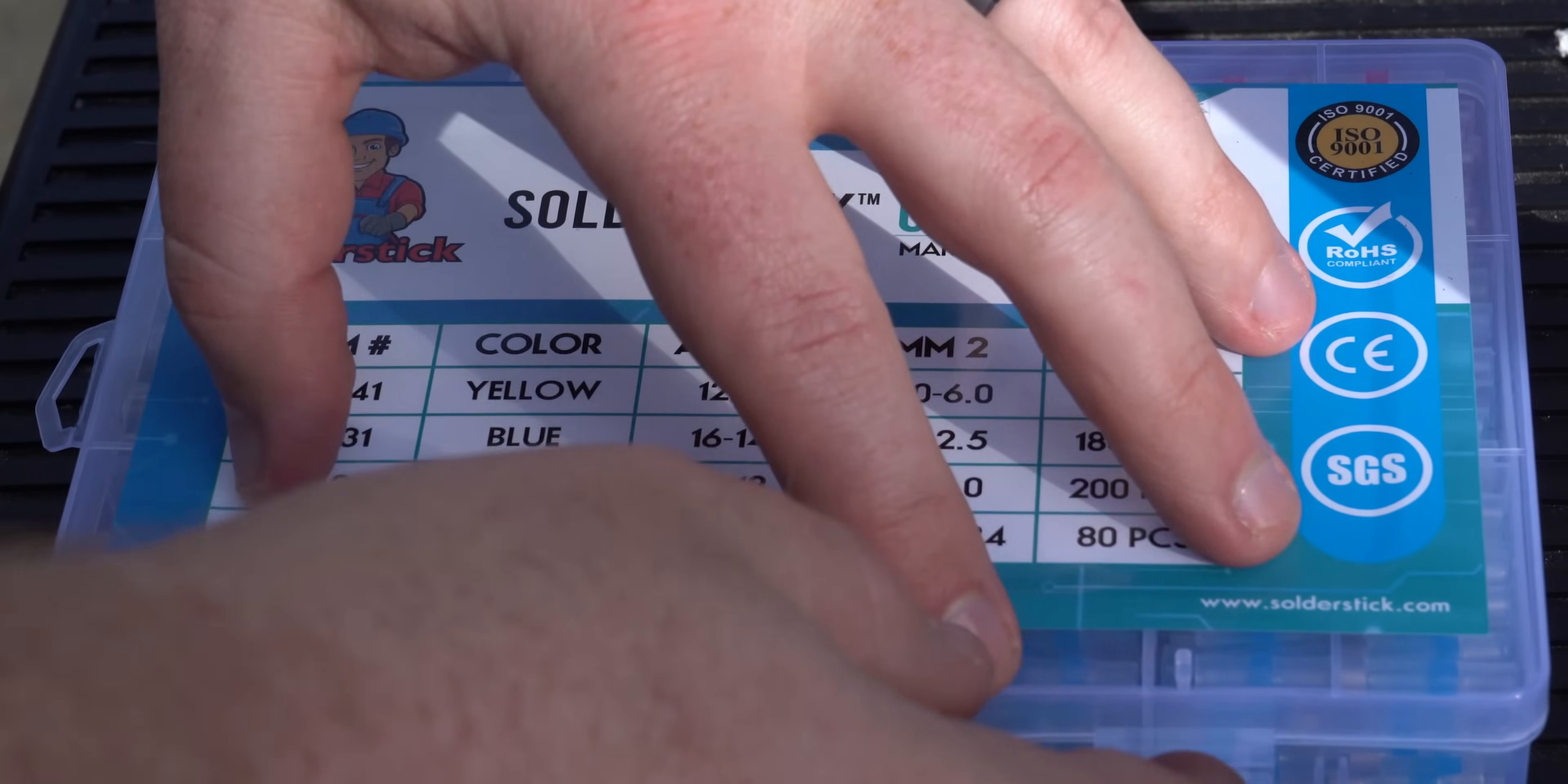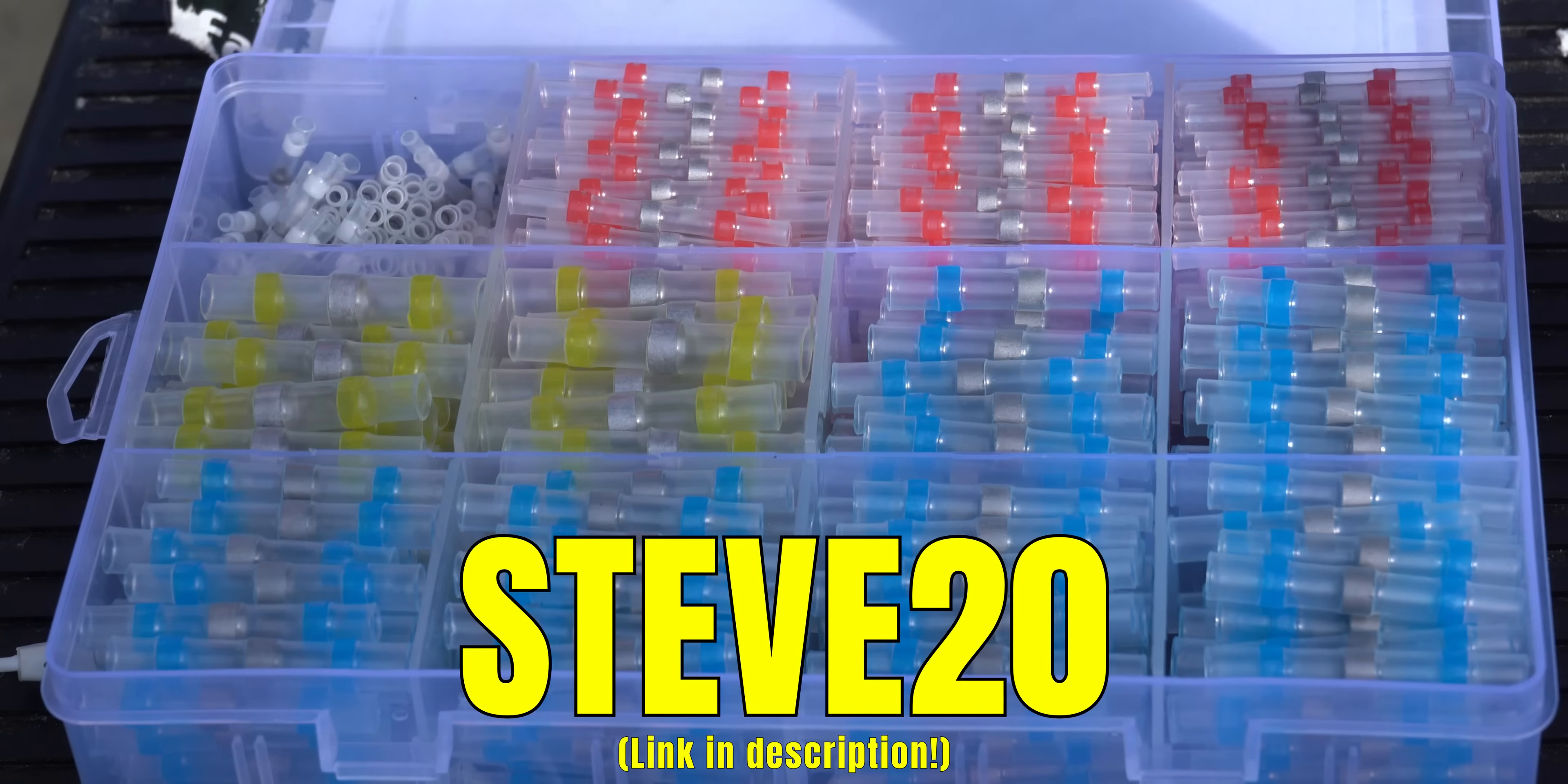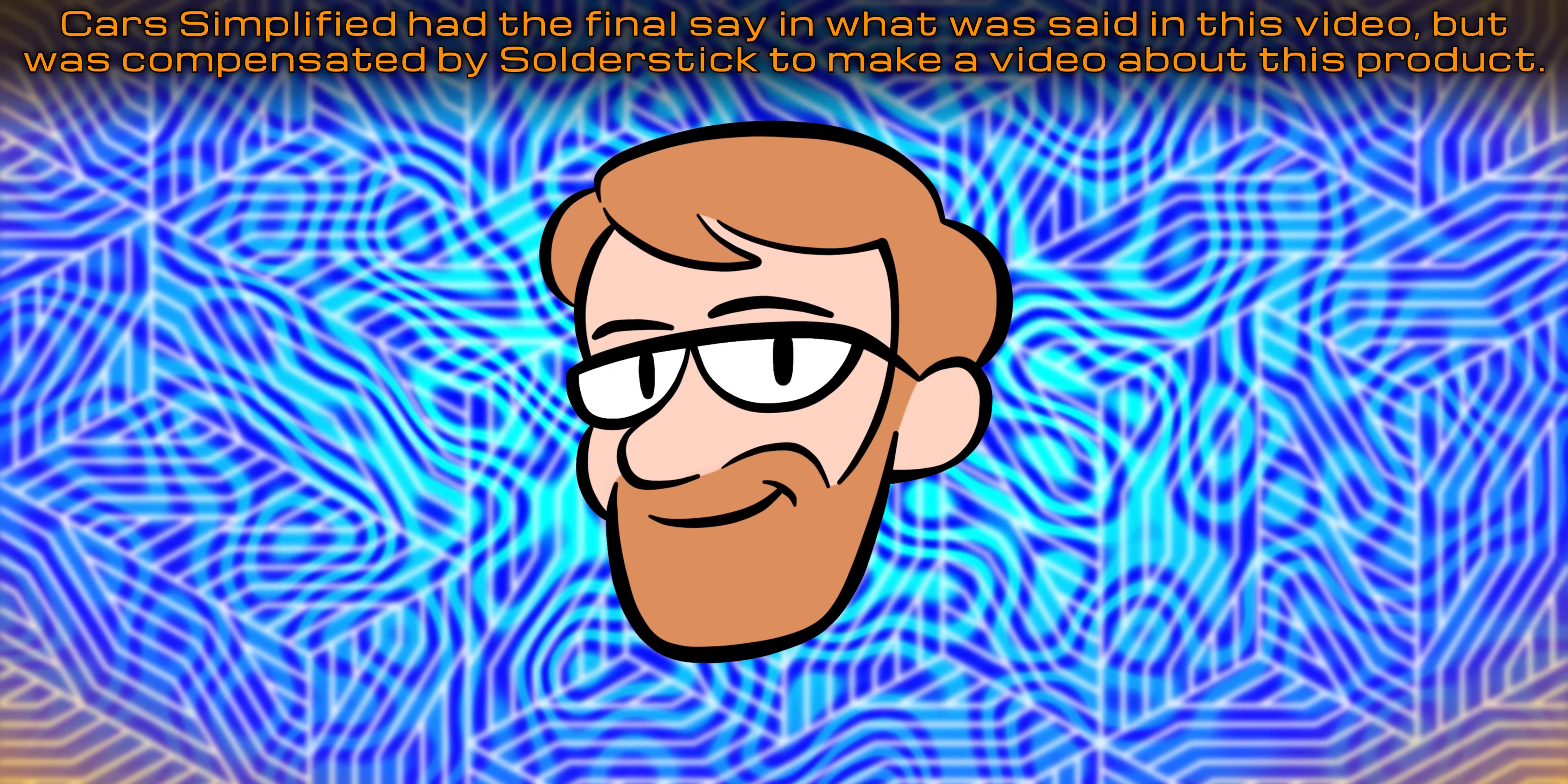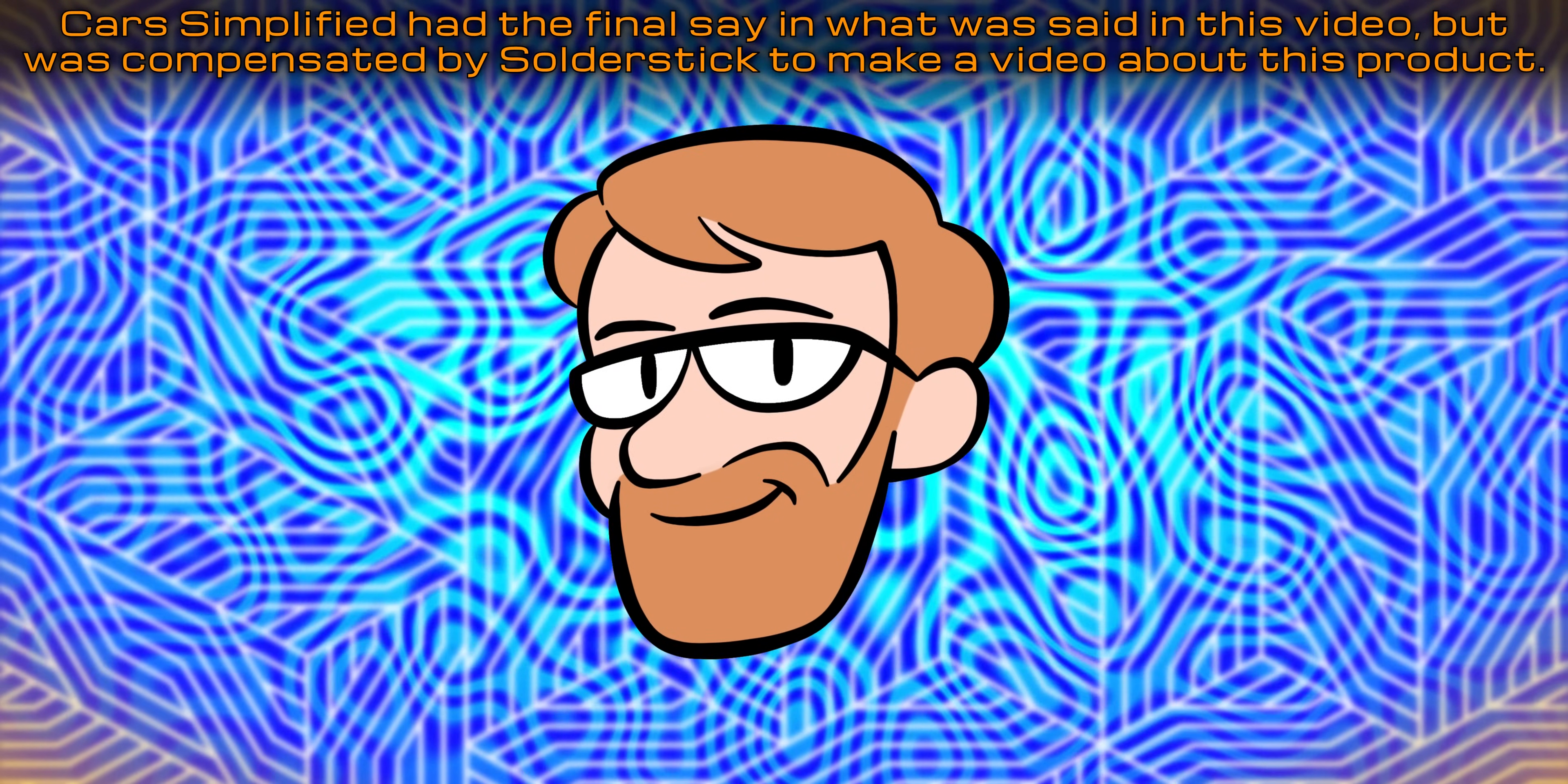If you want to get a kit like this for yourself, you can use my discount code STEVE20 to get 20% off, but sometimes they run even better deals, so if you see one of those, go for that. Check the description and pinned comment for a link. Thanks for watching Car Simplified.